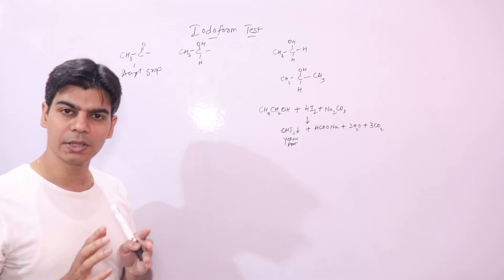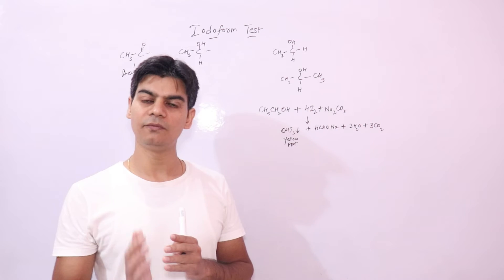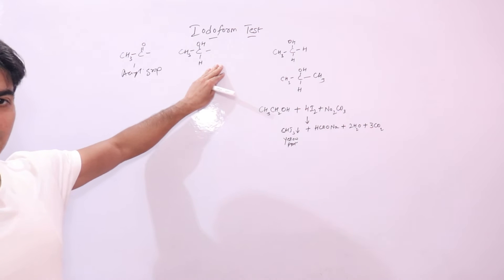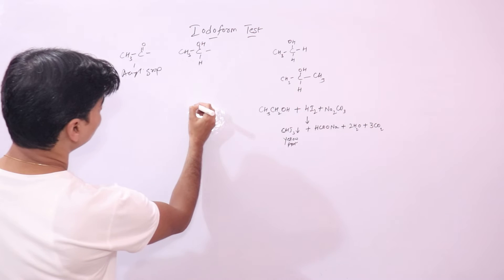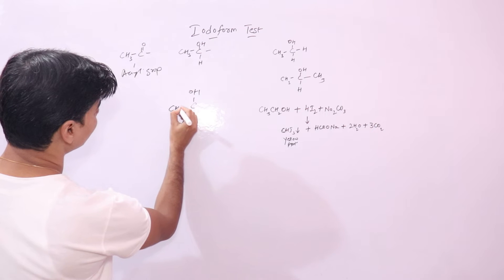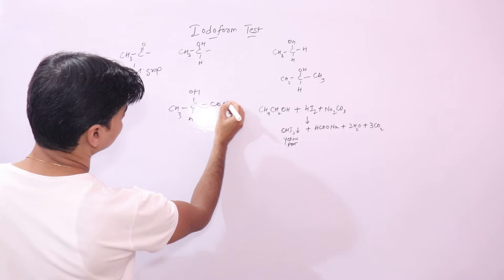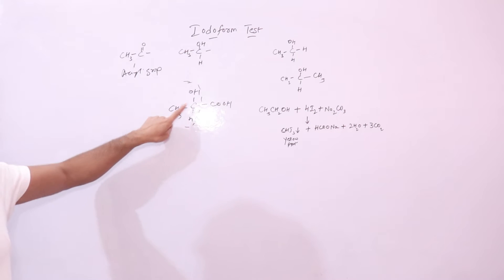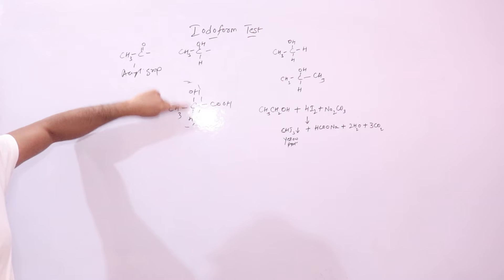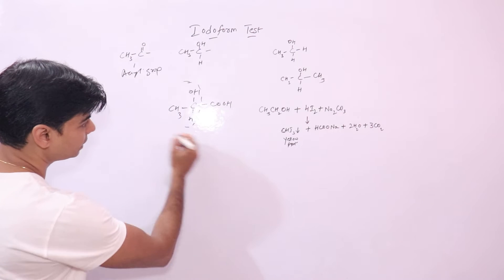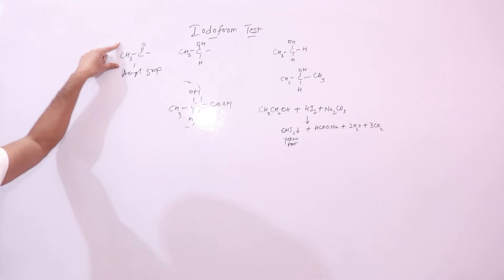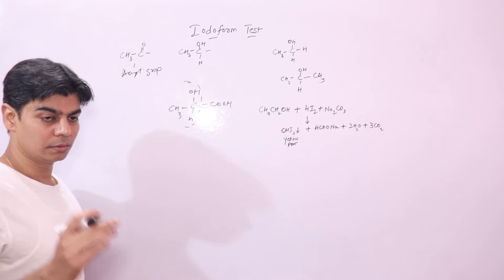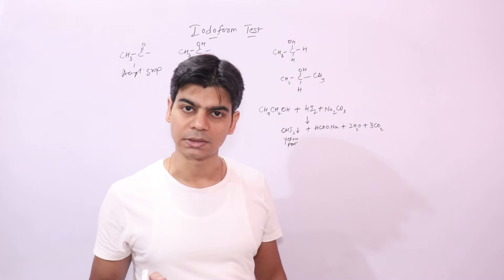If you have the acetyl group in an organic compound, it will give a positive Iodoform test. All compounds that contain this group will respond positively. For example, lactic acid — since it contains the CH3CHOH group, upon oxidation it will give you the acetyl group. So lactic acid will respond positively to the Iodoform test.